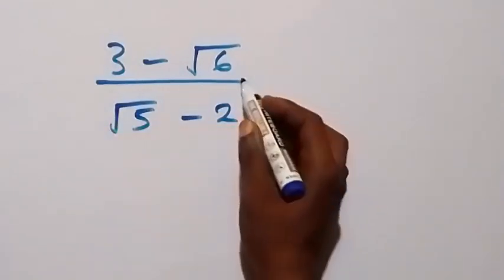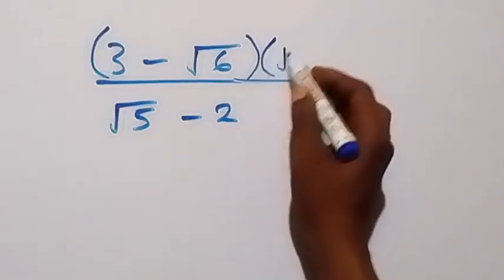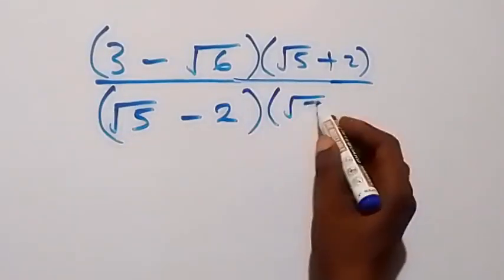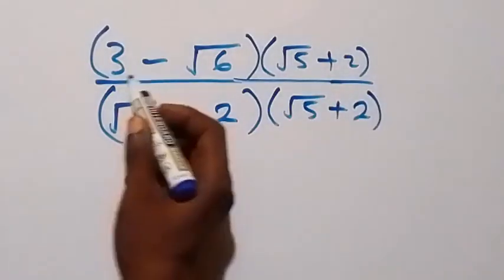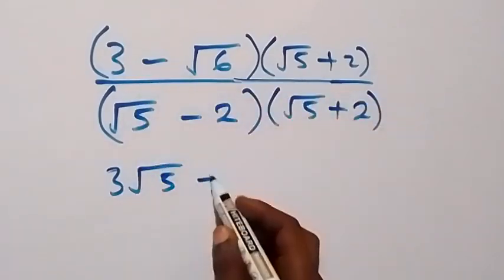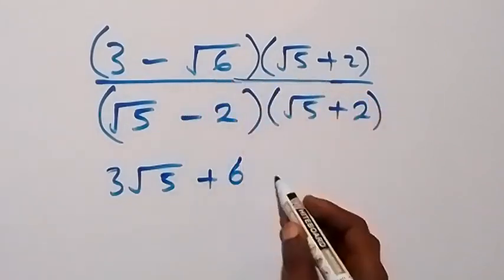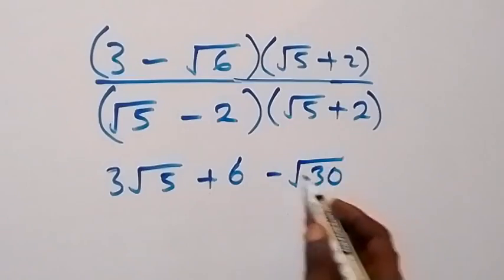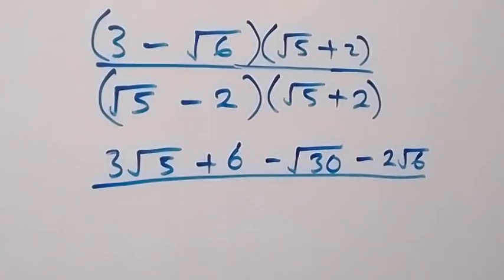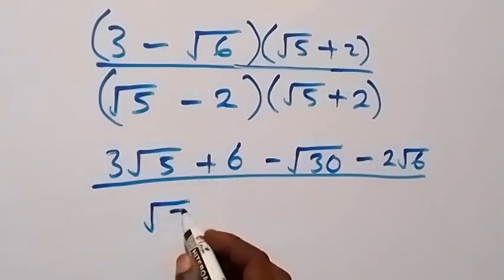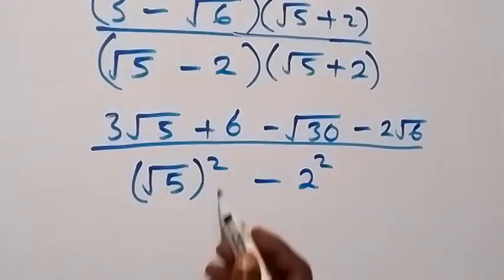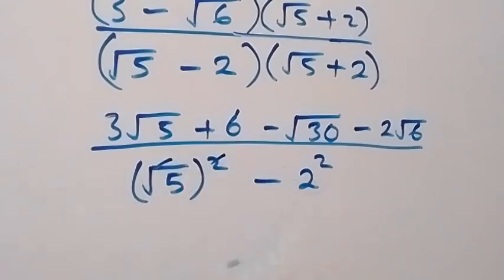We multiply by the conjugate, which is root 5 plus 2, and also divide by root 5 plus 2. Now expanding: 3 times root 5 is 3 root 5, then 3 times 2 is plus 6, then minus root 6 times root 5 is minus root 30, then minus root 6 times 2 is minus 2 root 6. Over here we have the conjugate product: root 5 squared minus 2 squared, which is 5 minus 4.